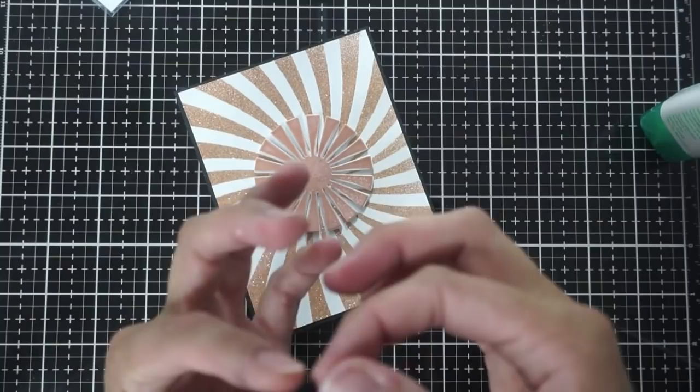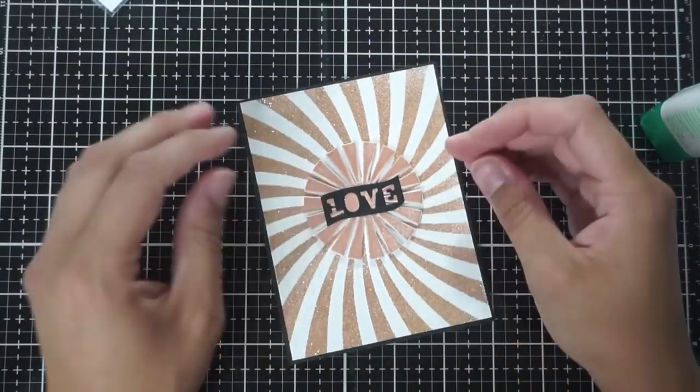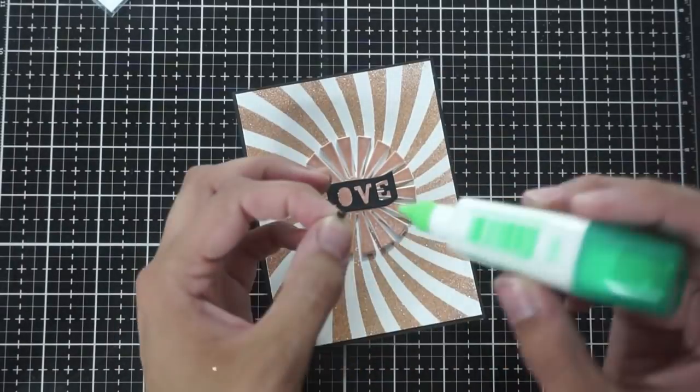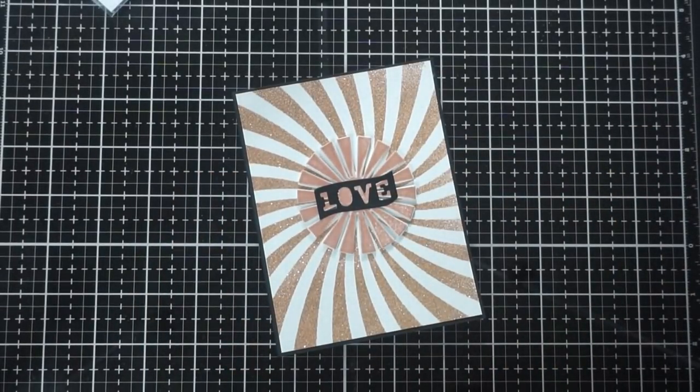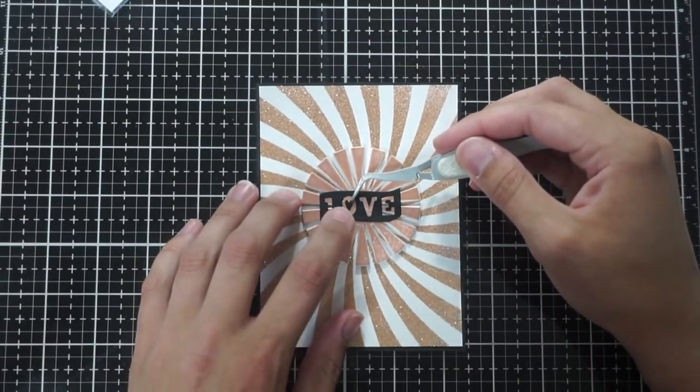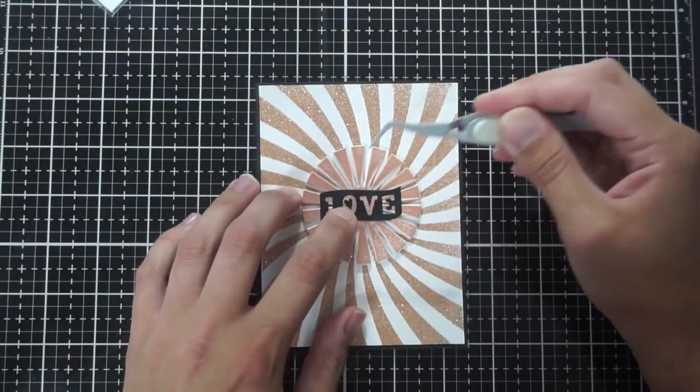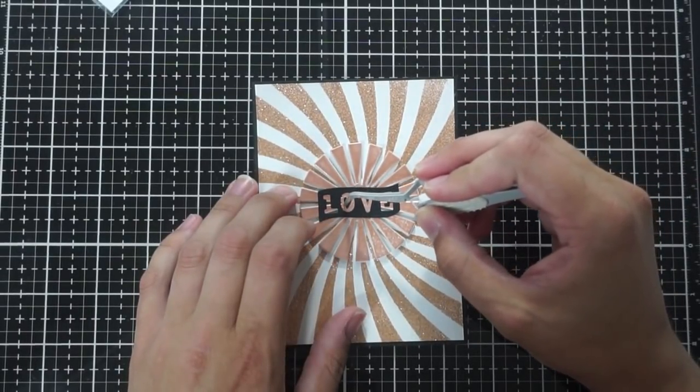So I'm going to adhere the love banner to the center of the sunburst die and then I'm going to take that tiny little heart and just put it right into the center of that O. I think it just gives it a little bit of something. You don't really need it, you can read the word without it, however I just think it's so cute in there. It's a really cute little detail that they thought about in that die cut.